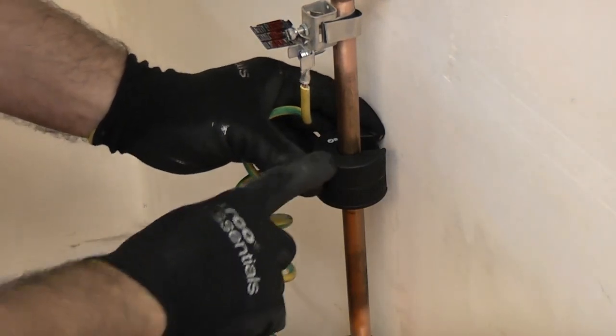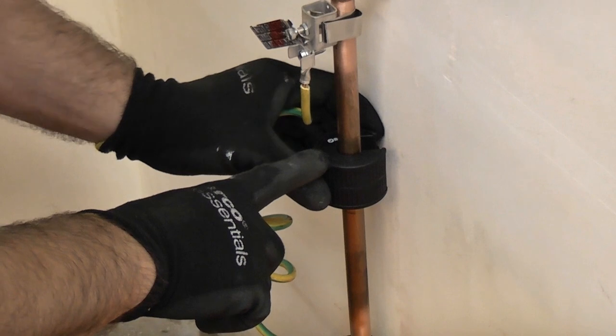It's important when you use a pipe slice that you go in the correct direction. This one has an arrow on it.